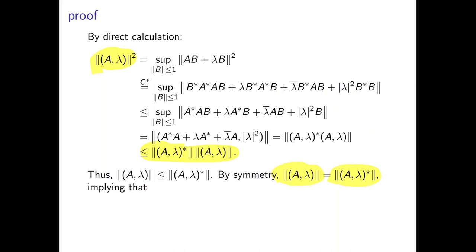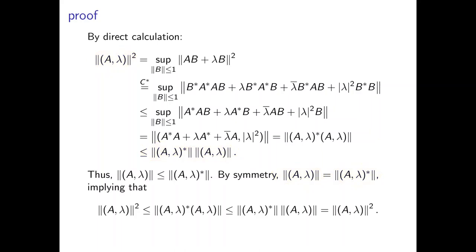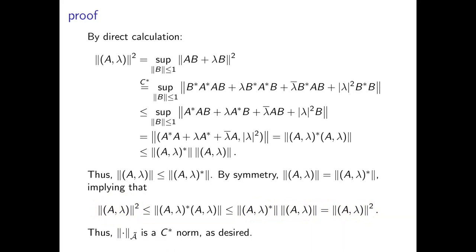Thus ‖(A,λ)‖ ≤ ‖(A,λ)*‖, and by symmetry — applying the exact same argument in reverse — ‖(A,λ)*‖ ≤ ‖(A,λ)‖. So the norms are equal. This means ‖(A,λ)‖² ≤ ‖(A,λ)*·(A,λ)‖ ≤ ‖(A,λ)*‖·‖(A,λ)‖ = ‖(A,λ)‖². We've squeezed the expression between two equal quantities, so the C-star property is satisfied. Therefore the unitization has a C-star norm and is a C-star algebra.